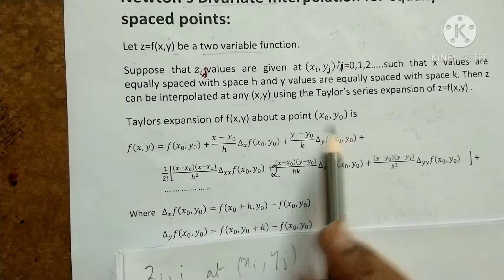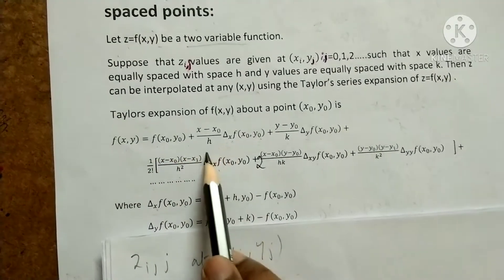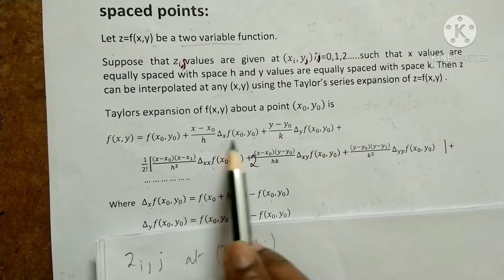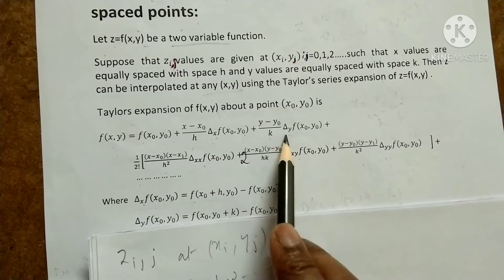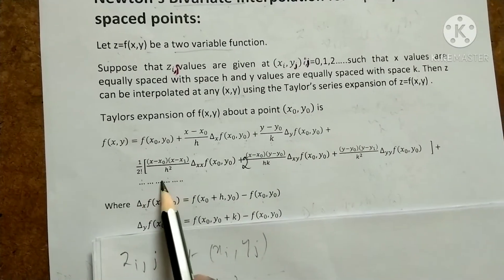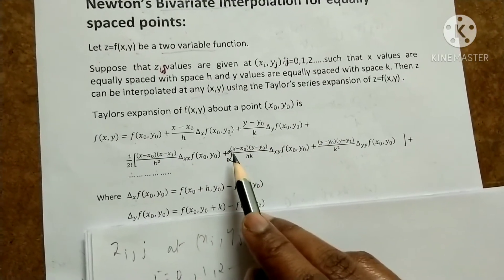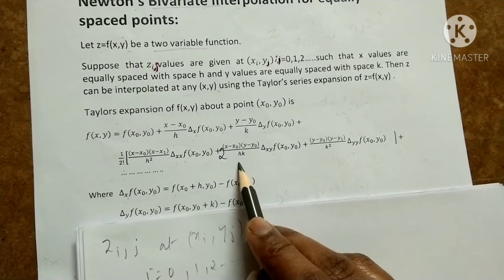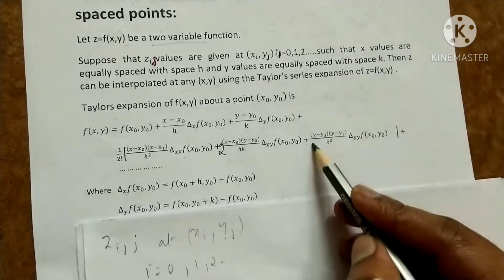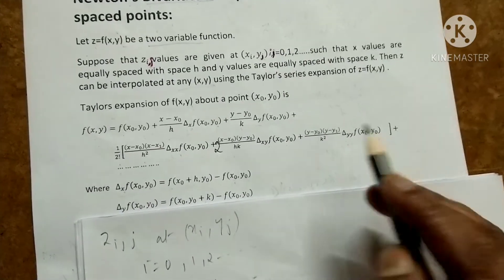The Taylor's expansion about (x_0, y_0) is: f(x,y) = f(x_0,y_0) + (x−x_0)/h · δ_x·f(x_0,y_0) + (y−y_0)/k · δ_y·f(x_0,y_0) + (1/2!) · (x−x_0)(x−x_1)/h² · δ_xx·f(x_0,y_0) + 2·(x−x_0)(y−y_0)/(hk) · δ_xy·f(x_0,y_0) + (y−y_0)(y−y_1)/k² · δ_yy·f(x_0,y_0).